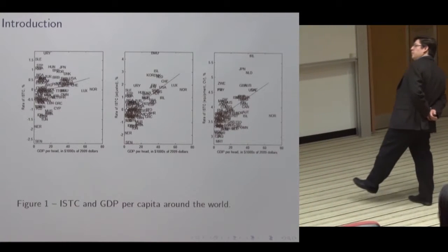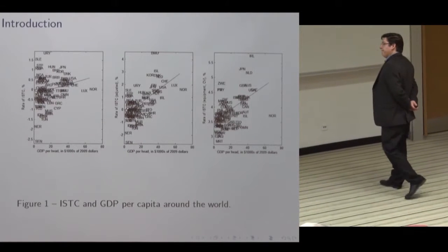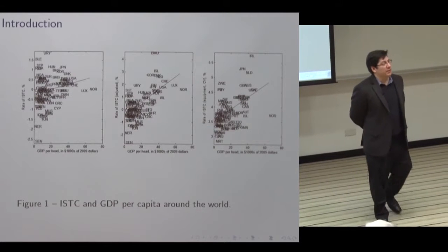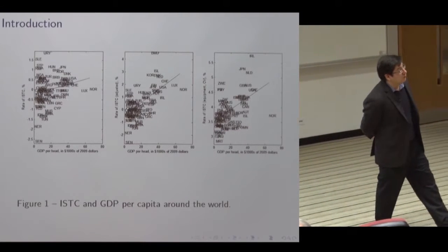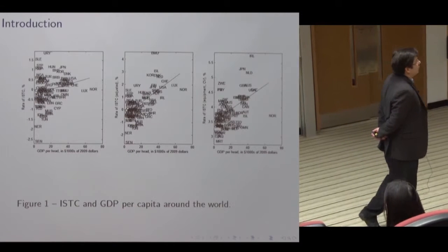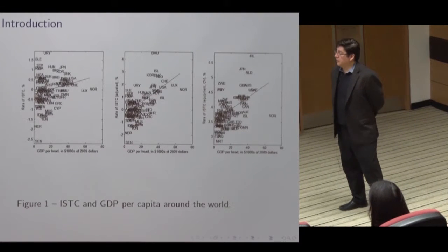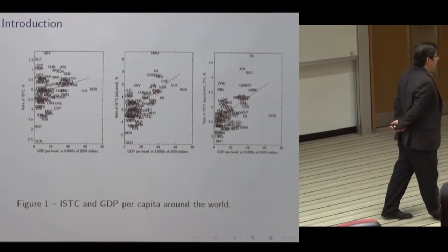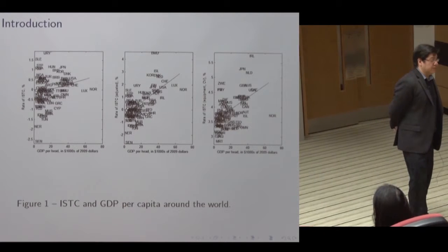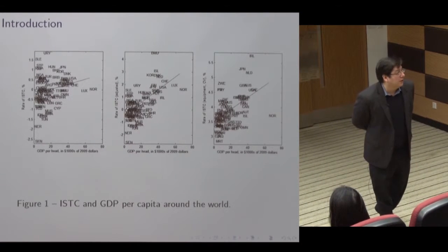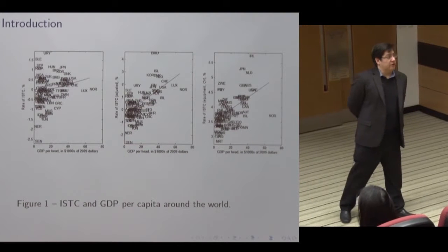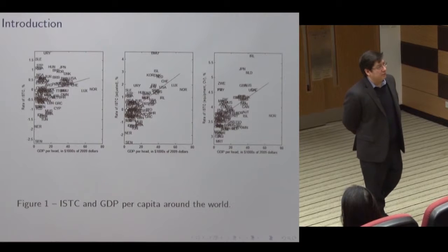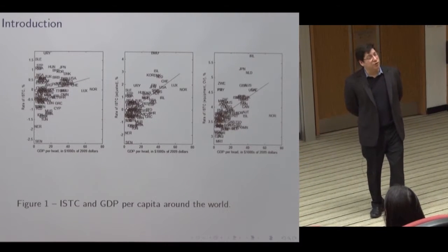Conceptually, it's the rate of change of the marginal rate of transformation between consumption and capital. In a typical growth model, output can be used for investment or consumption, and a unit of output that's not consumed turns into a unit of capital. In reality, a unit of output might turn into Q units of capital, and that number Q may change over time. ISTC is about how Q changes over time.